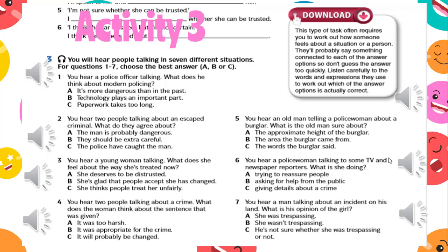Now read the instructions for Activity 3. You will hear people talking in seven different situations. For questions one to seven, choose the best answer: A, B, or C. Read the questions again, focusing on the options — underline keywords in the questions and answers that will help you listen for similar words in the recording to get accurate answers. Remember this is part of the listening strategy. Listen carefully for any rephrased words and pay attention to the tone of voice to figure out how speakers are feeling.